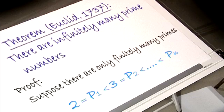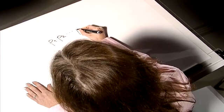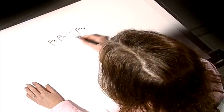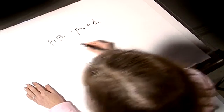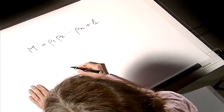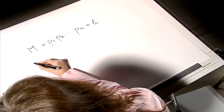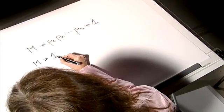We take these finitely many prime numbers p1, p2, up to pn and use them to construct a new integer m. We multiply them all together and add one. This new integer m is obviously, by construction, greater than one.